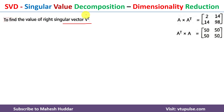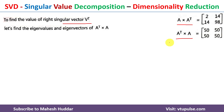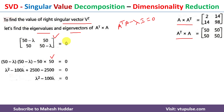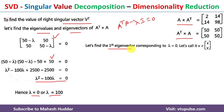Next we calculate V transpose using the same procedure, but using Aᵀ×A instead of A×Aᵀ. The eigenvalue equation is det(AᵀA − λI) = 0. Substituting the known values and taking the determinant: (50−λ)(50−λ) − 50×50 = 0. Simplifying gives λ² − 100λ = 0, so again λ = 0 and λ = 100.